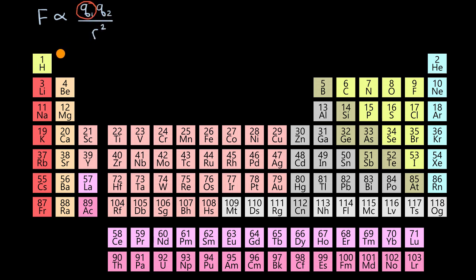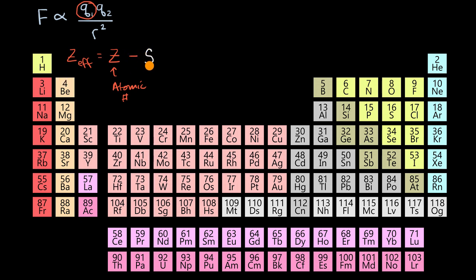We can view this effective charge — I'll call it Z effective — as being equal to the difference between the charge in the nucleus, which you can view as the atomic number or the number of protons that element has, and what is often known as S, or how much shielding there is. For an introductory chemistry class, this is often approximated by the number of core electrons, since we really want to think about what's going on with the valence electrons.